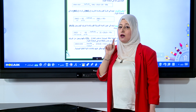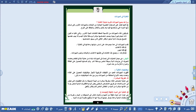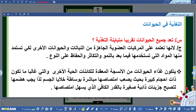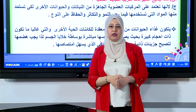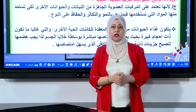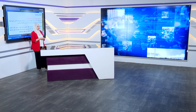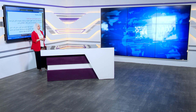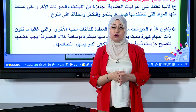ننتقل الآن إلى التغذية في الحيوانات. جميع الحيوانات تقريباً متباينة التغذية؛ فهي لا تمتلك اليخضور أو الكلوروفيل ولا تستطيع القيام بعملية البناء الضوئي لتحويل المواد اللاعضوية إلى مواد عضوية. لذلك تحصل الحيوانات على غذائها جاهزاً من النباتات أو من أجزاء حيوانات أخرى للحصول على الطاقة.